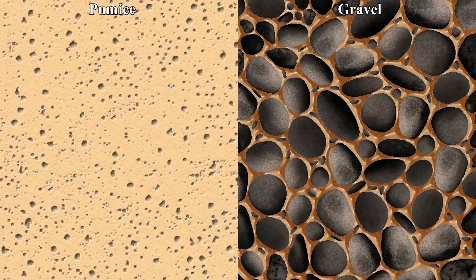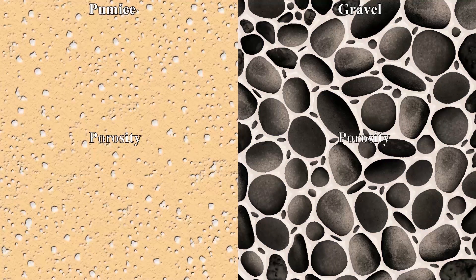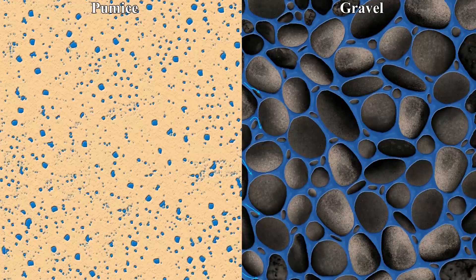Hydrogeologists use two terms when investigating aquifers: porosity and permeability. Porosity is all the empty pore space inside a rock, given in a percent volume. Porosity represents the volume of water a rock formation can potentially hold.